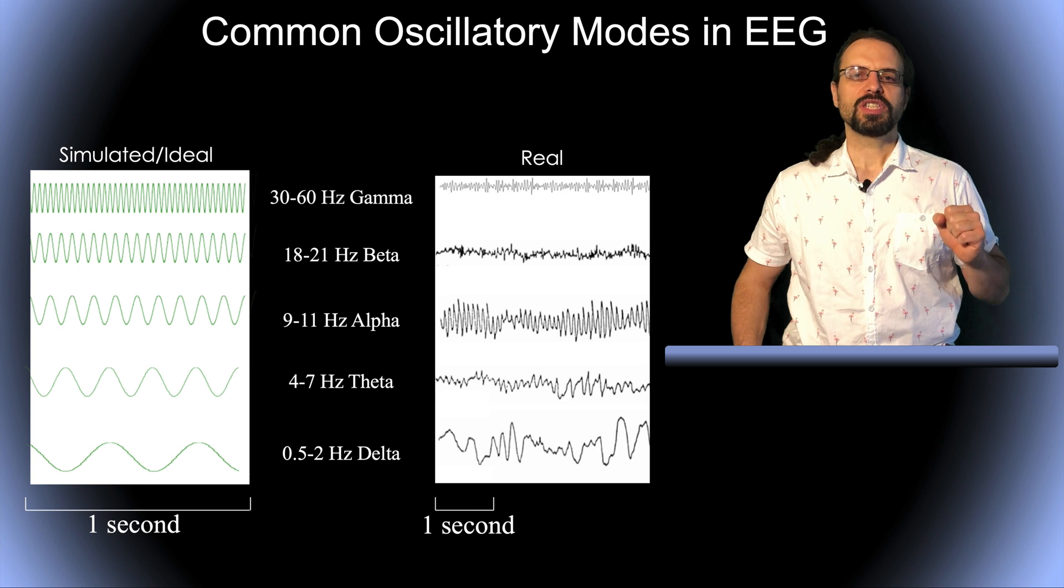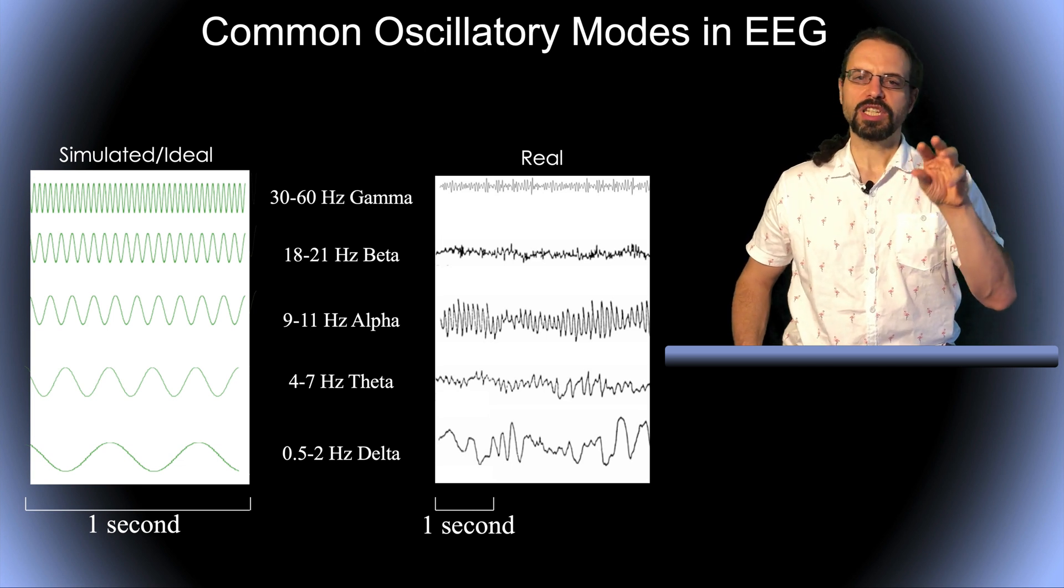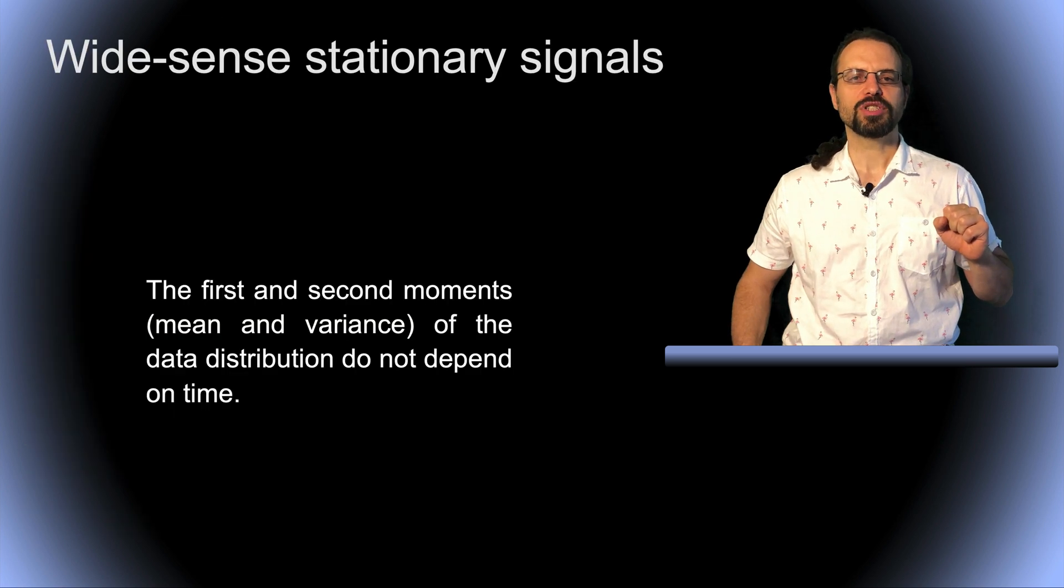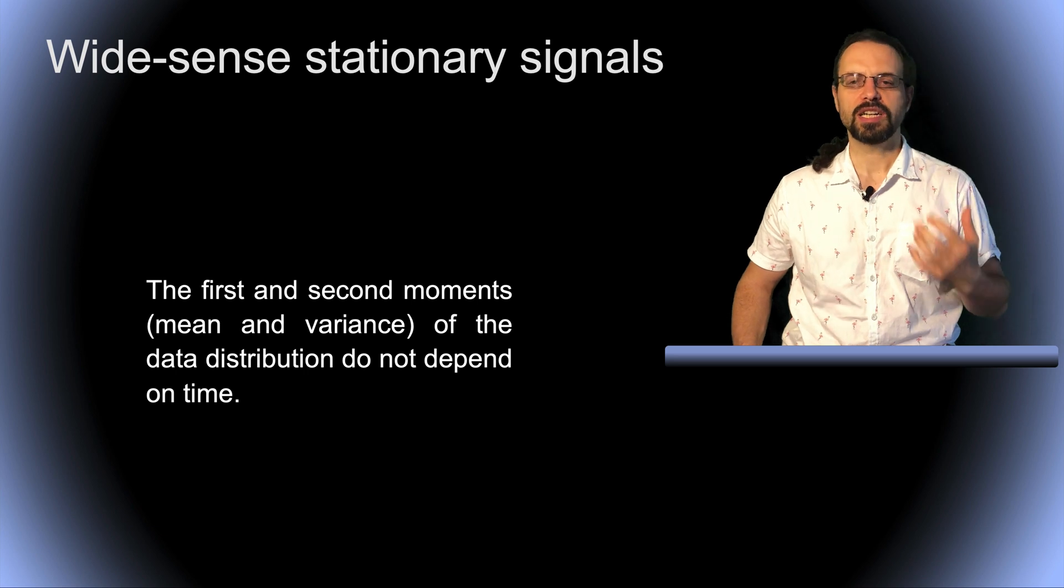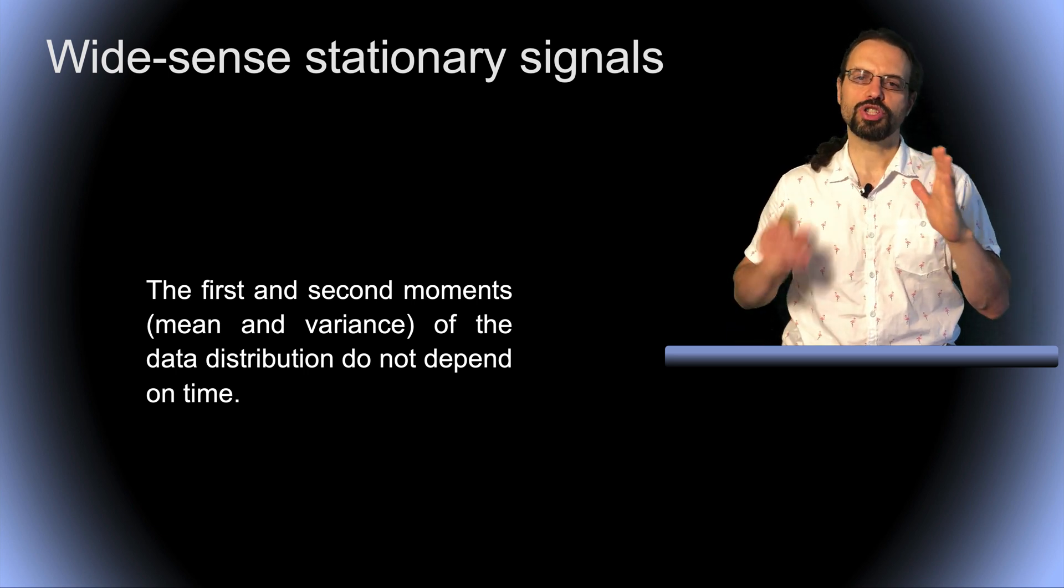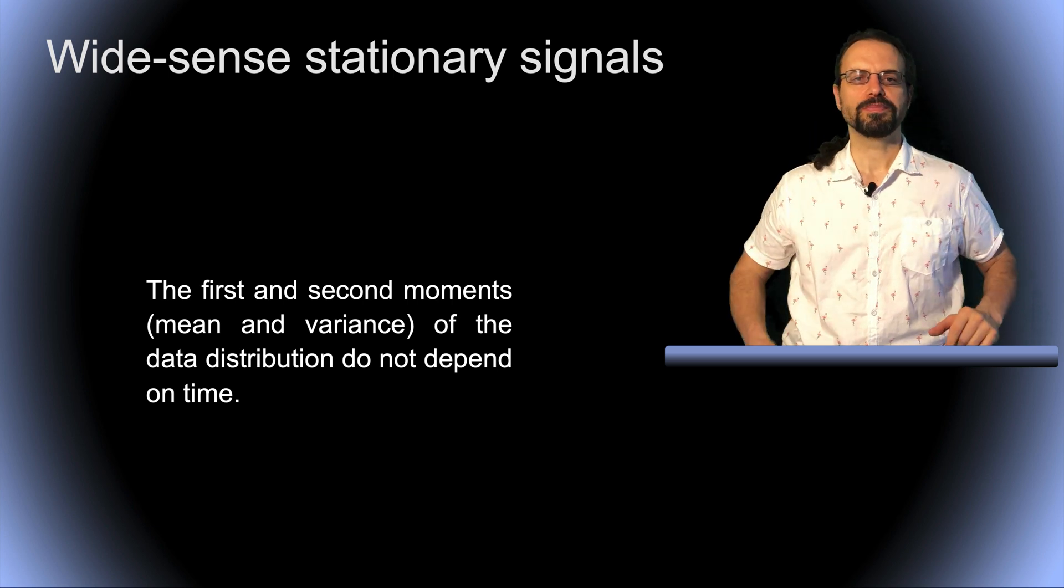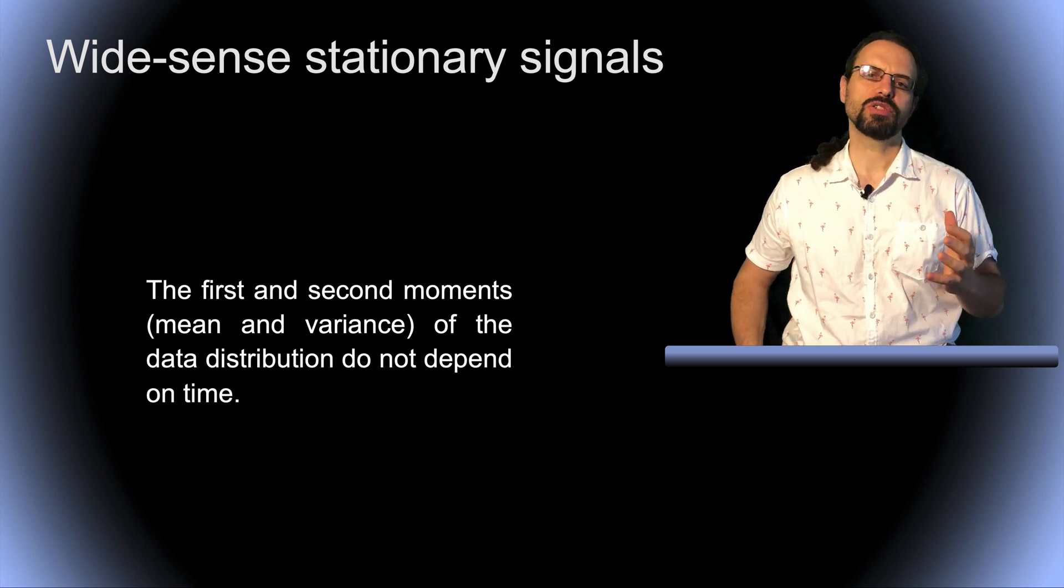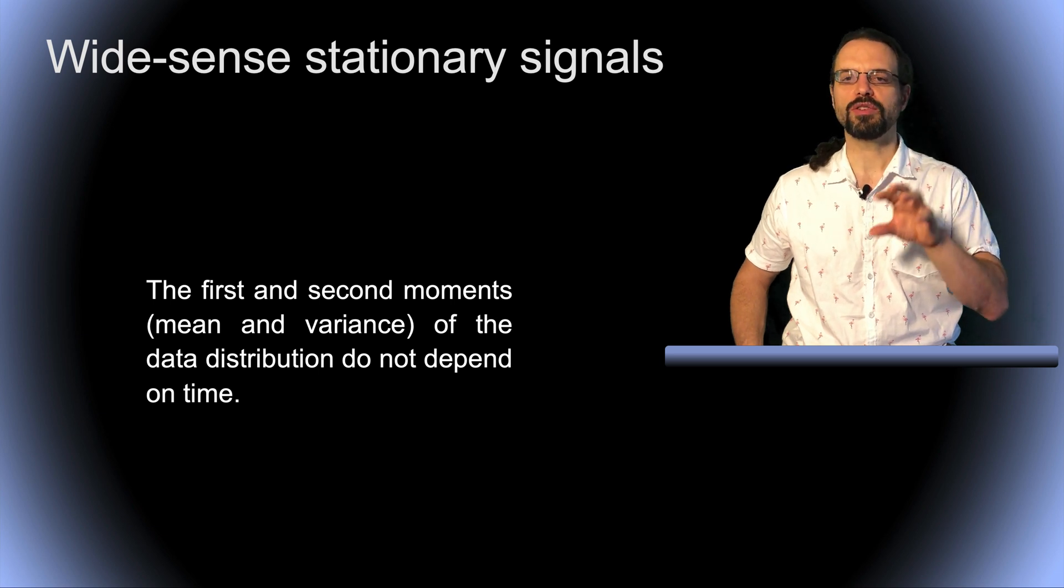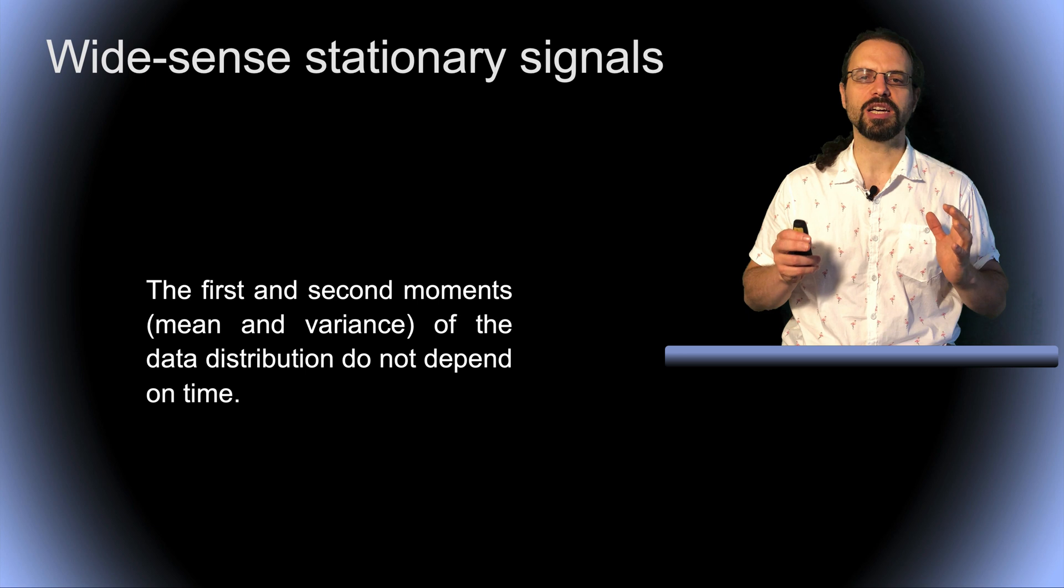So now we're going to see how we can extract the frequency content of the EEG signal. And for this, we need to make the assumption that the EEG signal is stationary. So this is not entirely true for EEG signal, but it's approximately true over short time windows. And by stationary, we mean that the first and second moment, so the mean and the variance of the data distribution doesn't depend on time.